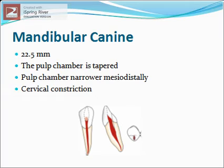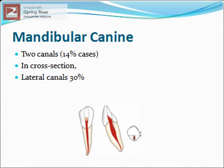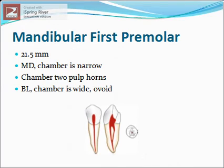Mandibular canine: the average length is 22.5 mm. Labiolingually, the pulp chamber is tapered; it appears narrower mesiodistally and there is a single cervical constriction at the junction between the pulp chamber and the root canal. The mandibular canine usually has one root and one canal, but can occasionally have two. Coronally, the root canal is oval in cross section and becomes round in the apical region. Lateral canals are present in 30 percent of cases.